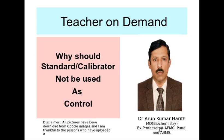Welcome friends to another lecture on the teacher on demand series. This lecture was initiated by a student who asked a very simple question: standards and controls are solutions where we know the original value of the analyte. Then why can't we use standards as controls, and why do we need to purchase two different sets of reagents? To understand this, we need to understand the basics of colorimetric testing.